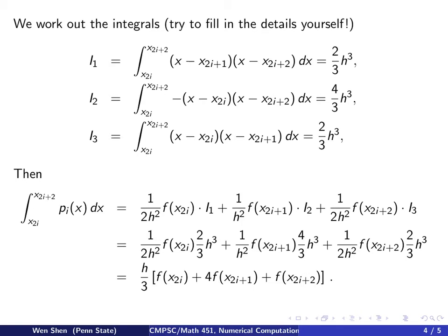So after taking out that common factor, h over 3, we just have the function value on the left of the interval plus the function value on the right of the interval plus 4 times the function value in the middle of that interval.